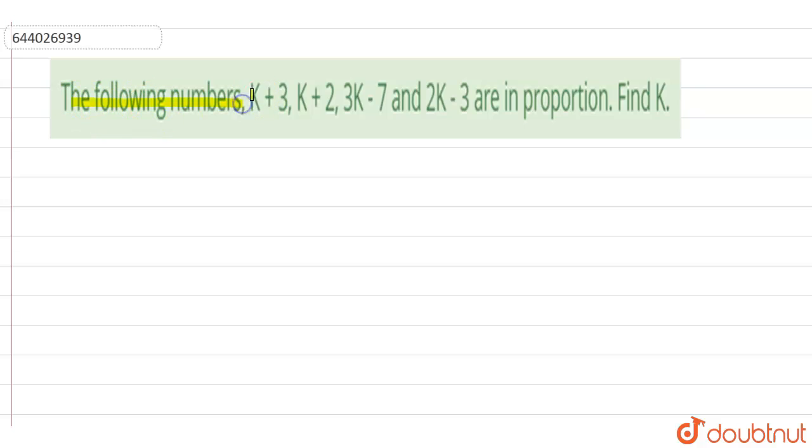It is given: the following numbers K+3, K+2, 3K-7, and 2K-3 are in proportion.